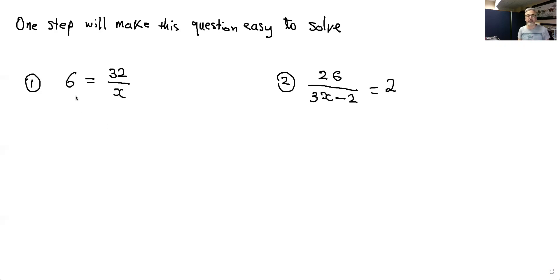It's about cross multiplying, but just know when you have this kind of situation, 6 goes where the x is and x goes where the 6 is. So now you have x equals 32 over 6.